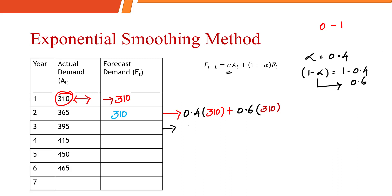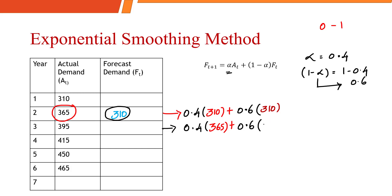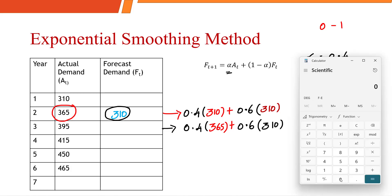The next calculation is for the third year: 0.4 into the previous year's actual demand, which is 365, plus 1 minus alpha (0.6) into 310 as the previous forecasted data. So 0.4 into 365 plus 0.6 into 310 gives us a value of 332.